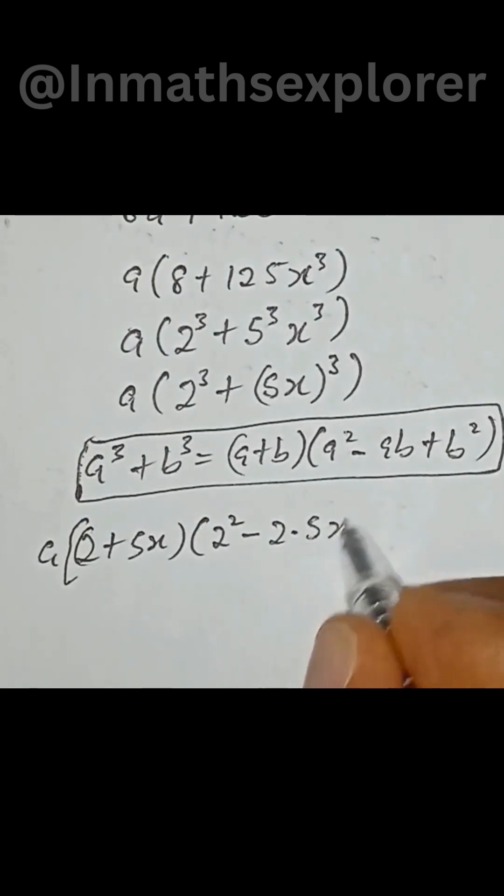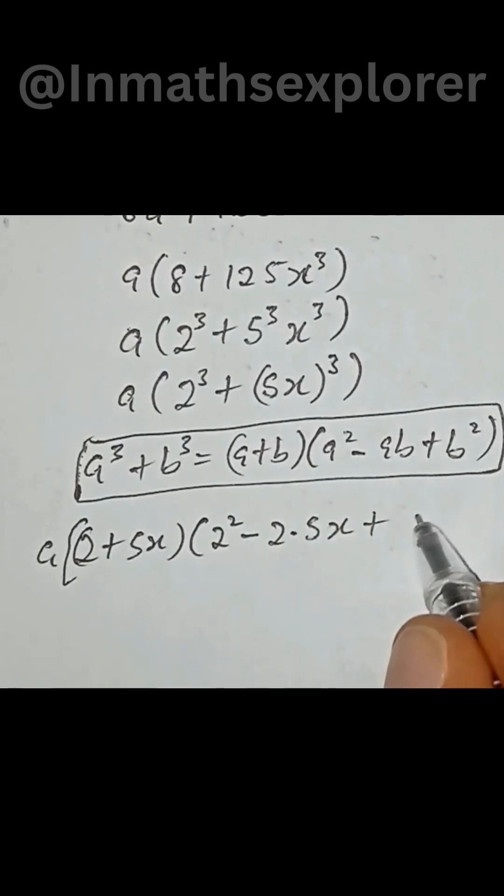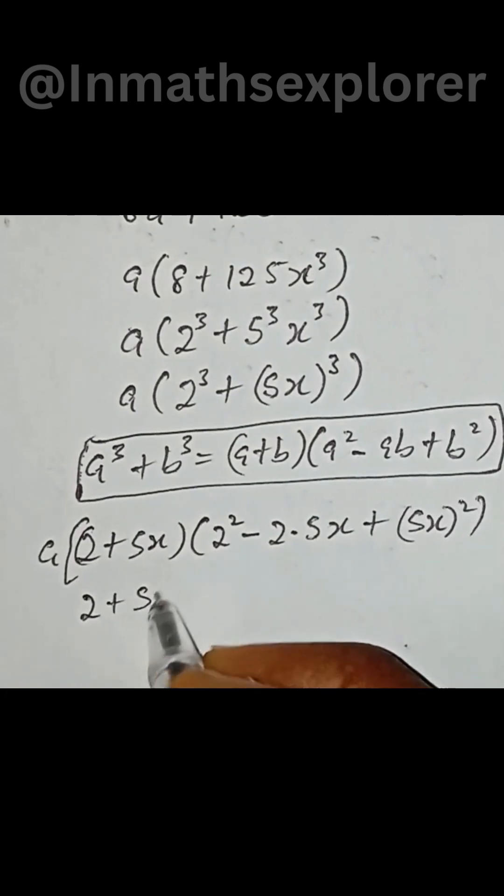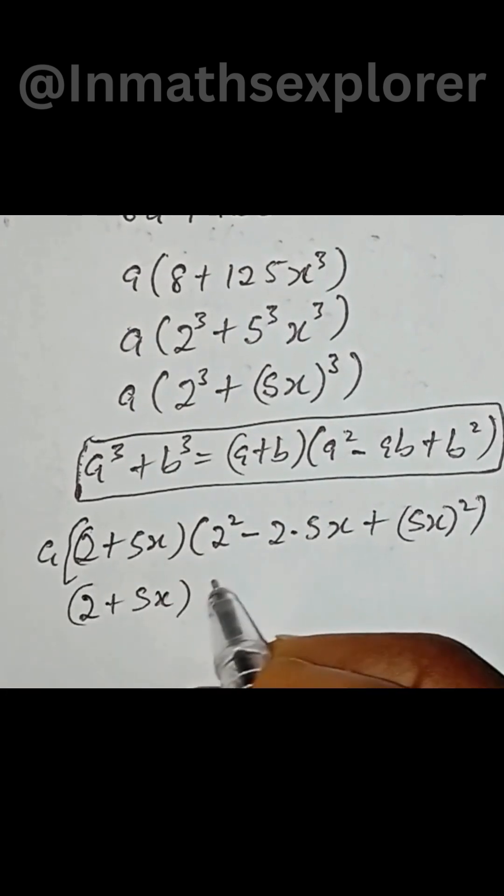Multiply by 5x multiply by 5x plus 5x squared. So putting this proper we have 2 plus 5x into brackets.